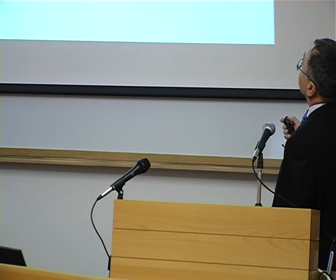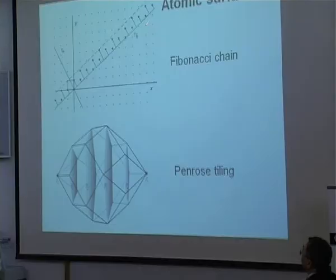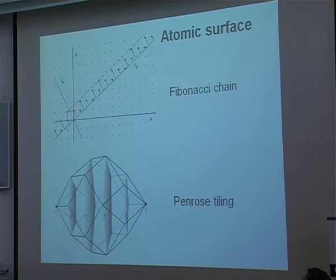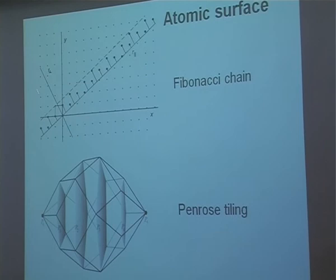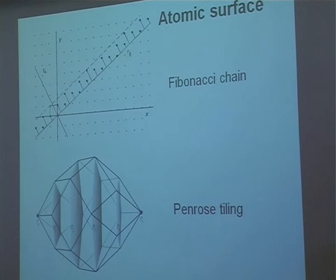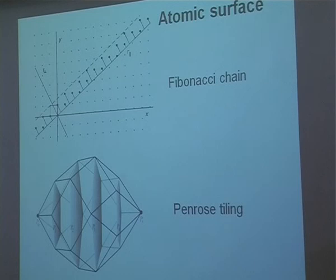What is the high dimension? For the Fibonacci sequence — the Fibonacci chain — we have a periodic two-dimensional structure. We have a physical space or parallel space, and then we have an inner space or perpendicular space. Everything which is in a strip can be projected into physical space, and we obtain a sequence of distances. If it is given by a number called the golden mean tau, then we have a Fibonacci sequence. The atomic surface is that bound from here to here.